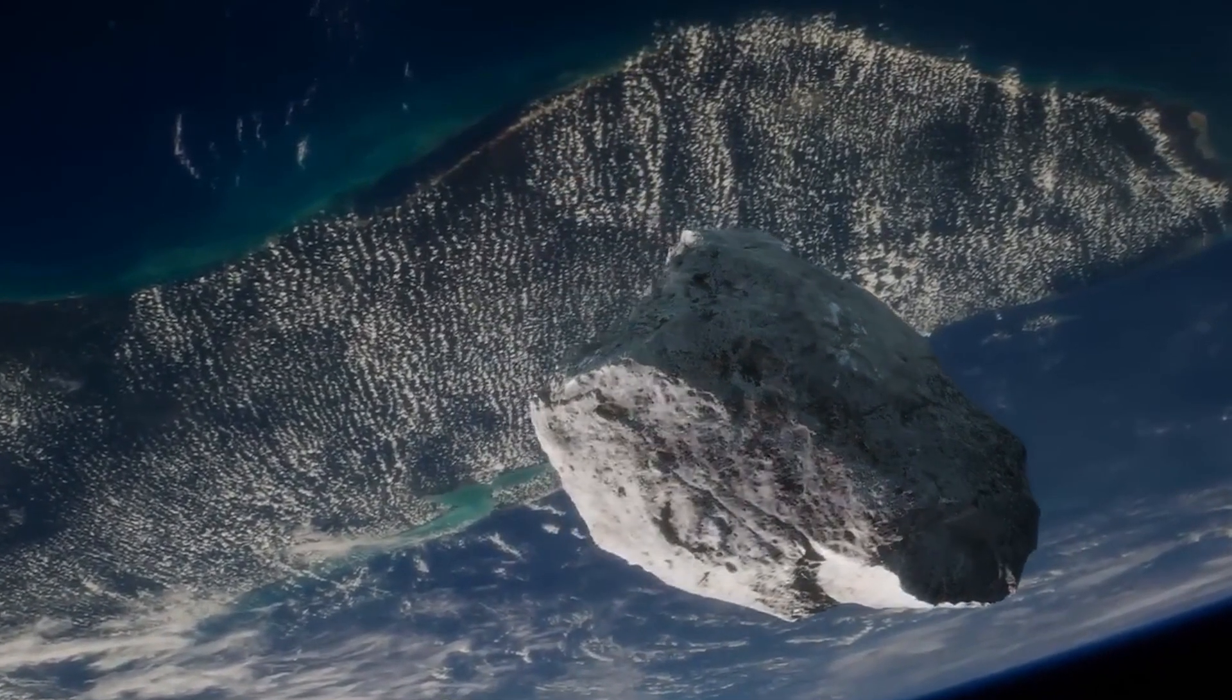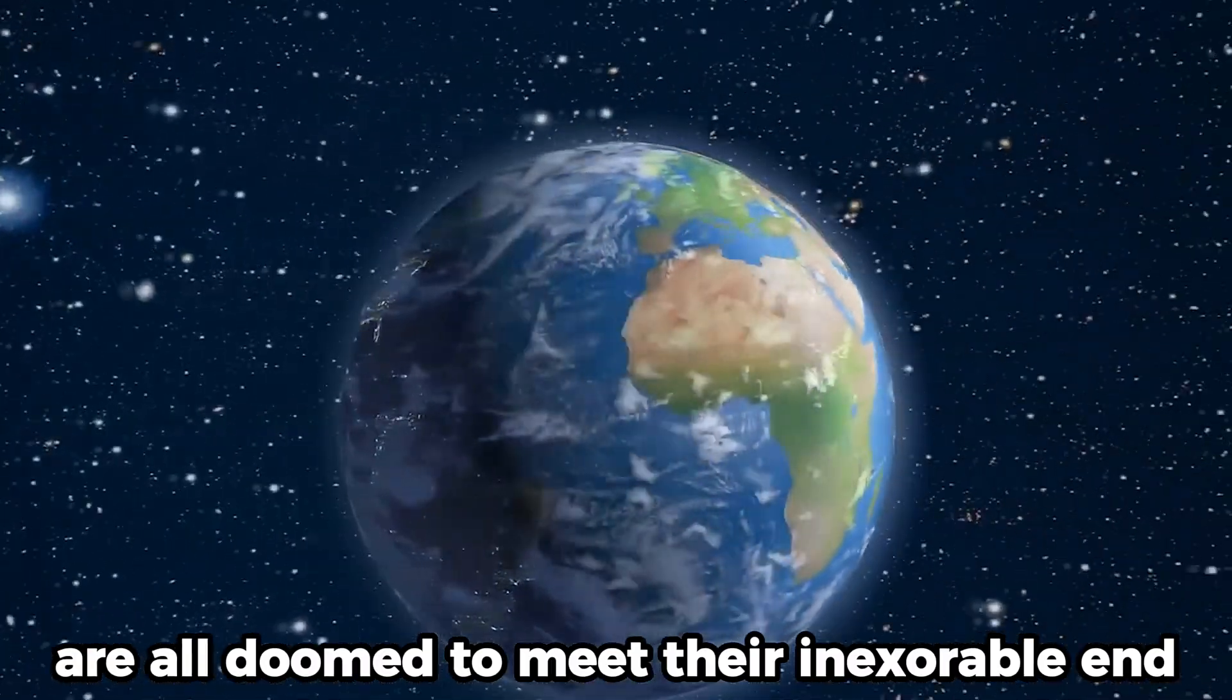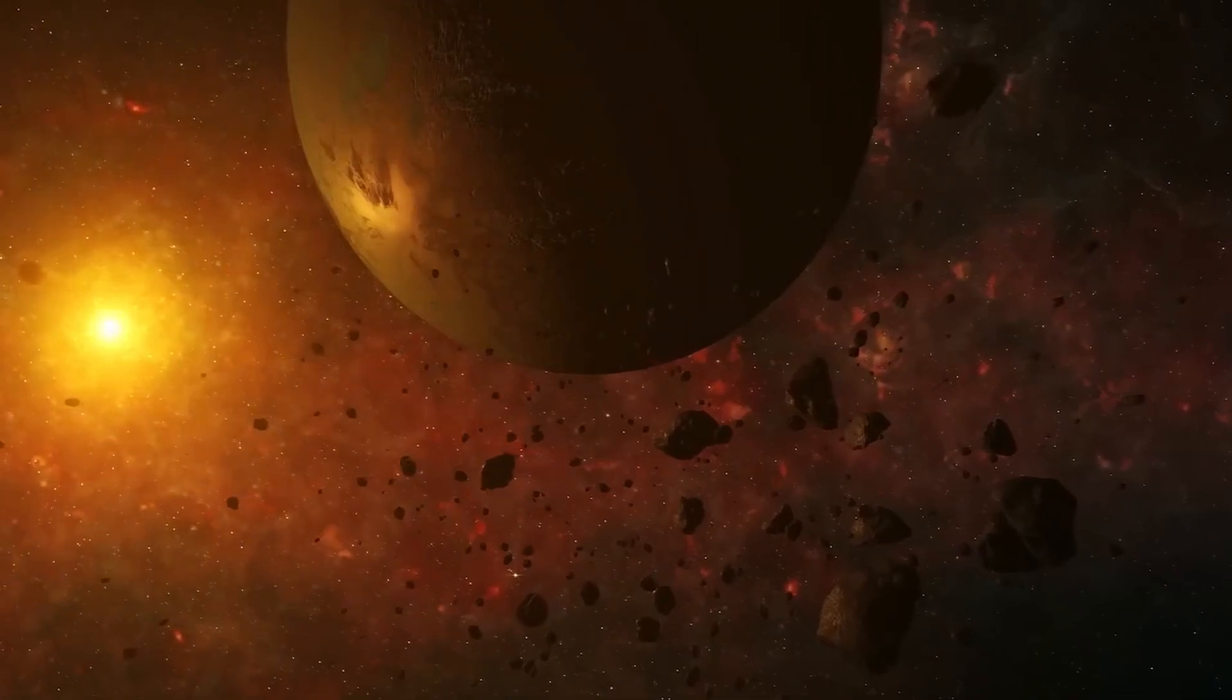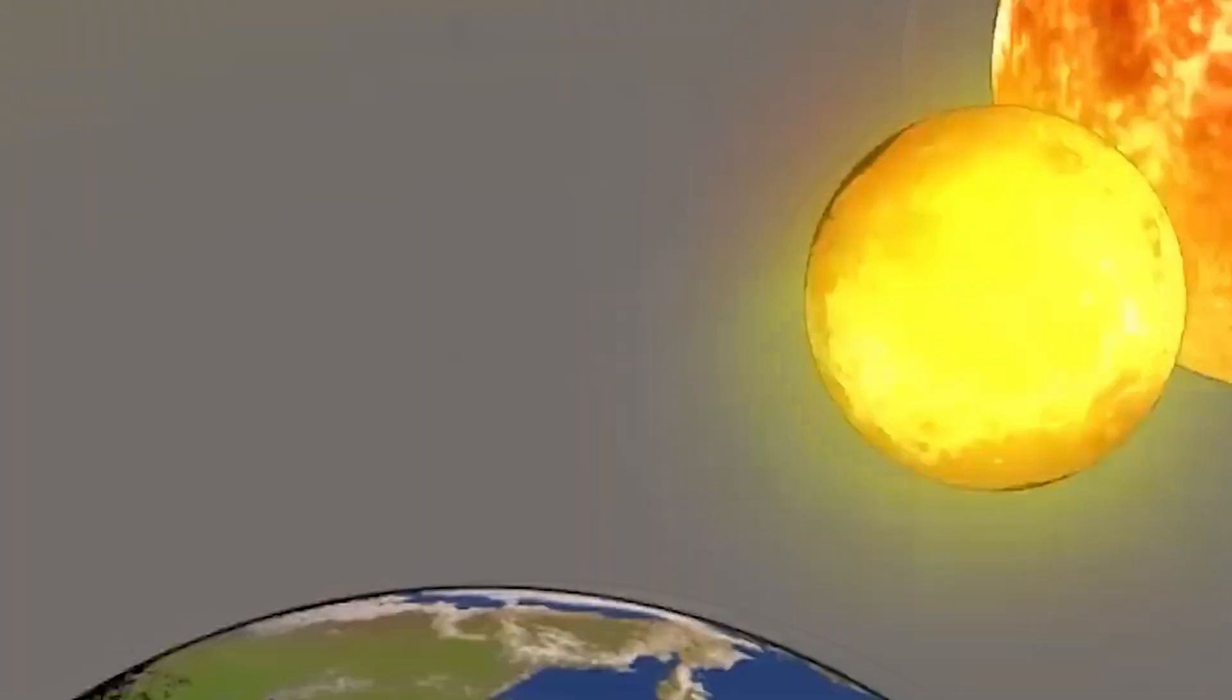Mercury, Venus, and probably even Earth are all doomed to meet their inexorable end. This is the natural course of events. It is projected that the Sun will finally complete a complete orbit around Mercury in around 6 billion years, which will lead to the extinction of the planet within a few thousand years.